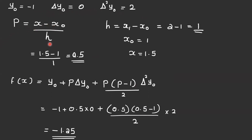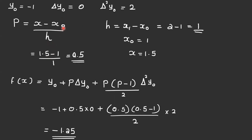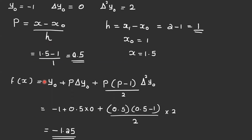p = (x - x₀)/h. We need f(1.5), so x = 1.5, x₀ = 1, h = x₁ - x₀ = 2 - 1 = 1. Therefore p = (1.5 - 1)/1 = 0.5.